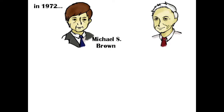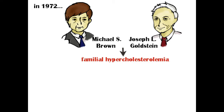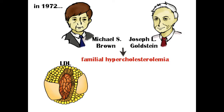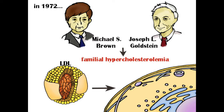In 1972, Michael Brown and Joseph Goldstein discovered that the cholesterol level within the blood of patients with familial hypercholesterolemia, or FH for short, was many times that of their healthy counterparts. Through research, they investigated the molecular basis of the disease and realized that this is due to the inability of LDL to cross the cell membrane.